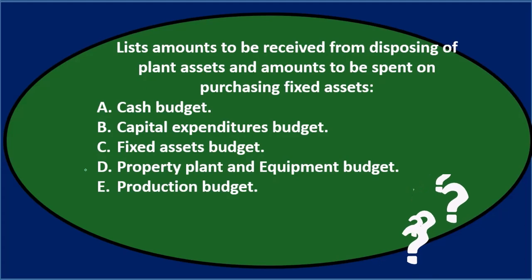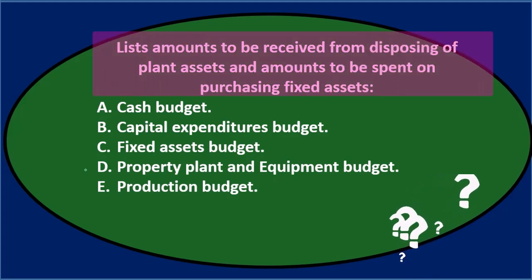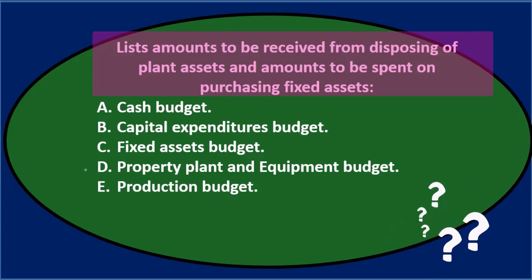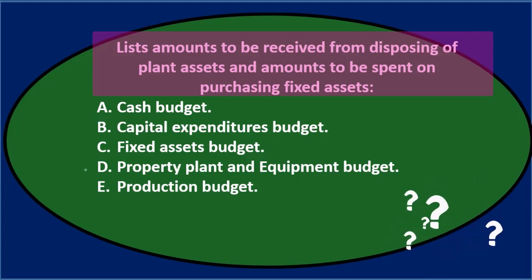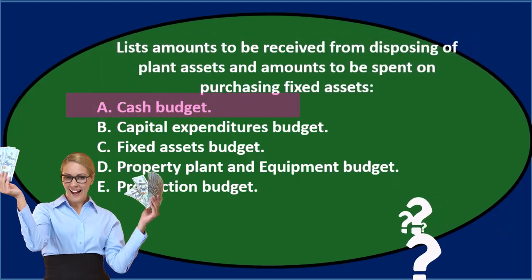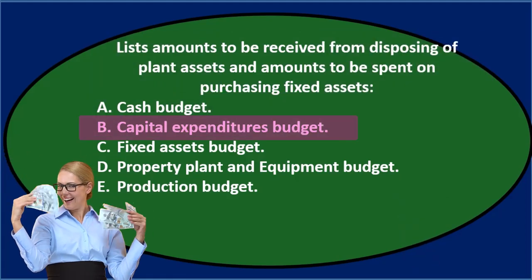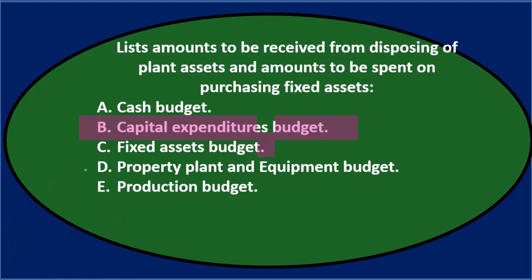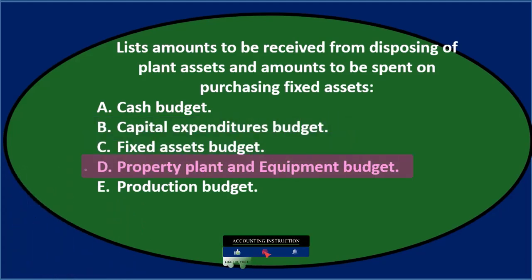Next question. Lists amounts to be received from disposing of plant assets and amounts to be spent on purchasing fixed assets. A: Cash budget. B: Capital expenditures budget. C: Fixed assets budget. D: Property, plant and equipment budget. E: Production budget. Let's go through this again using the process of elimination.